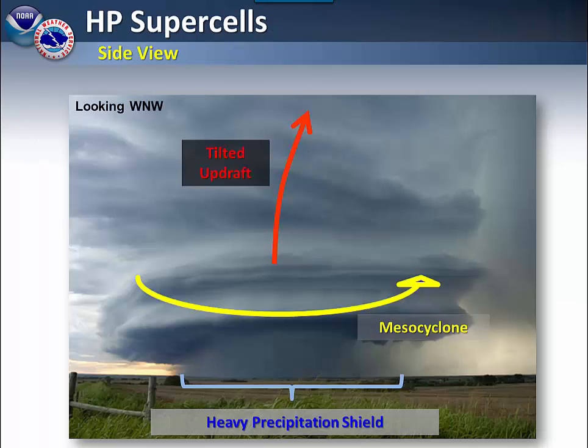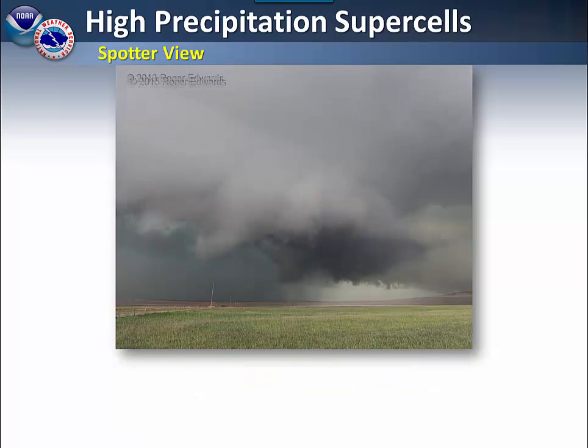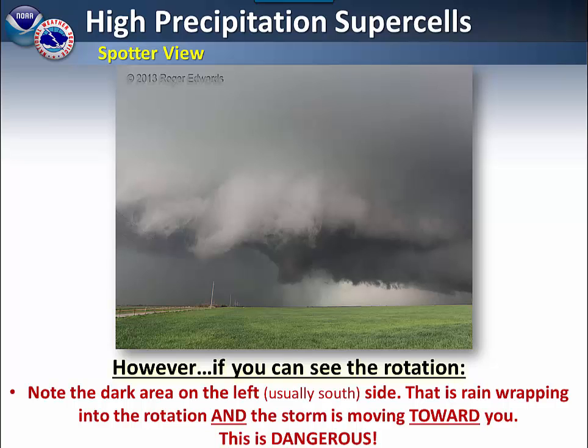With a high precipitation or HP supercell, these are much more difficult to spot. In this particular example, you can see the heavy rain occurring underneath the mesocyclone. Usually the south side of the storm is the best place to be stationed. However, in this location, you typically can't see the lowest rotation because it is obscured by the rain. If you happen to see the rotation, you are probably not in the best location, as the rain is wrapping into the tornado and the storm is moving toward you.